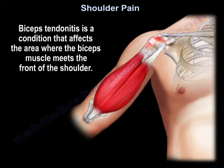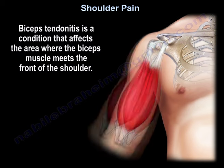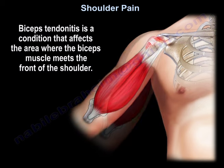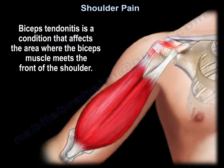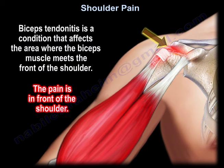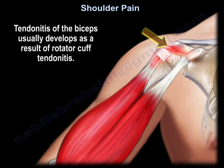Biceps tendinitis is a condition that affects the area where the biceps muscle meets the front of the shoulder. The pain is in front of the shoulder. Tendinitis of the biceps usually develops as a result of rotator cuff tendinitis.